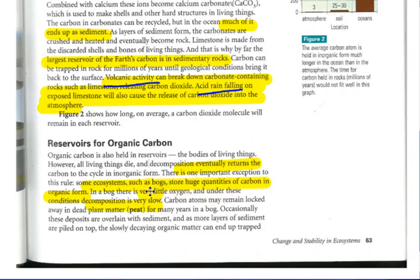There's one exception though. If some ecosystems, such as bogs, or you can think of swamp areas, huge quantities of carbon are in organic form, and it's kind of under locked conditions, and decomposition is very, very slow. So carbon atoms may be locked away in dead plant matter, possibly animal matter, for many years. Occasionally, these deposits are overlaid with sediment, and as more layers of sediment are piled up, that carbon becomes trapped because the decaying plants or animals, mammals, are not exposed.